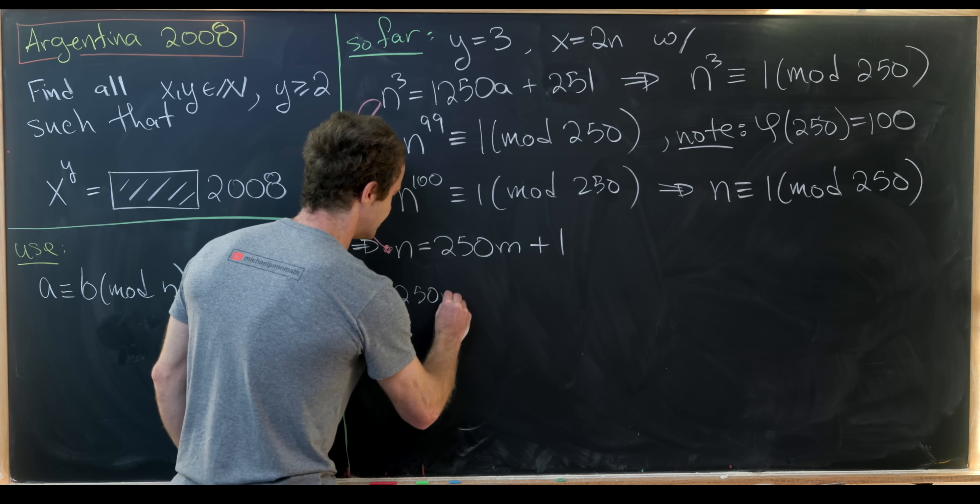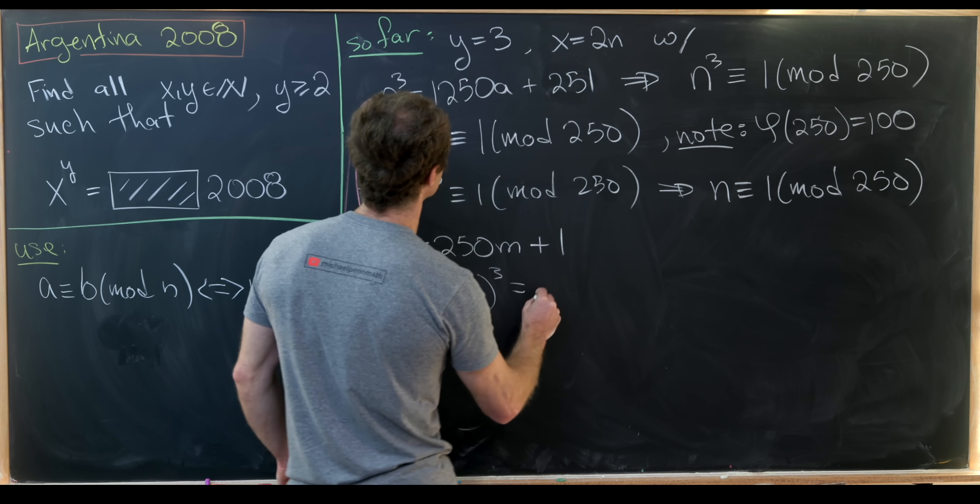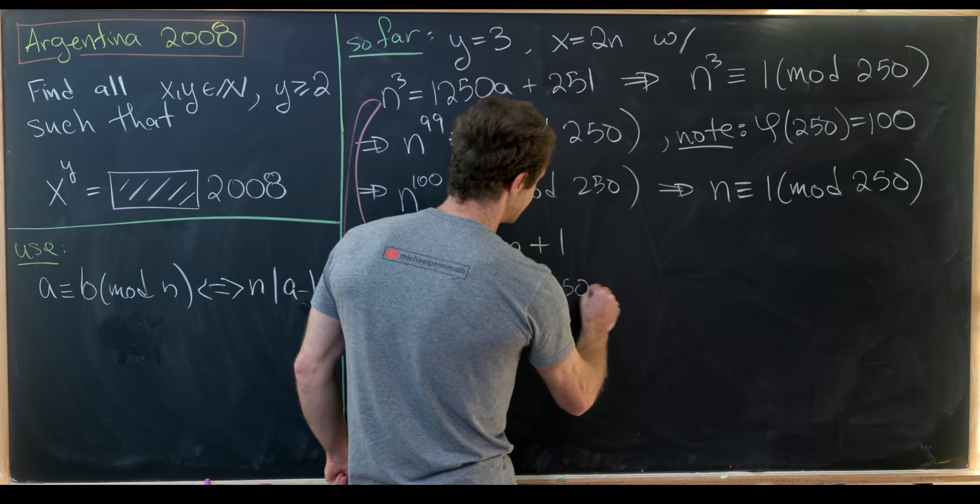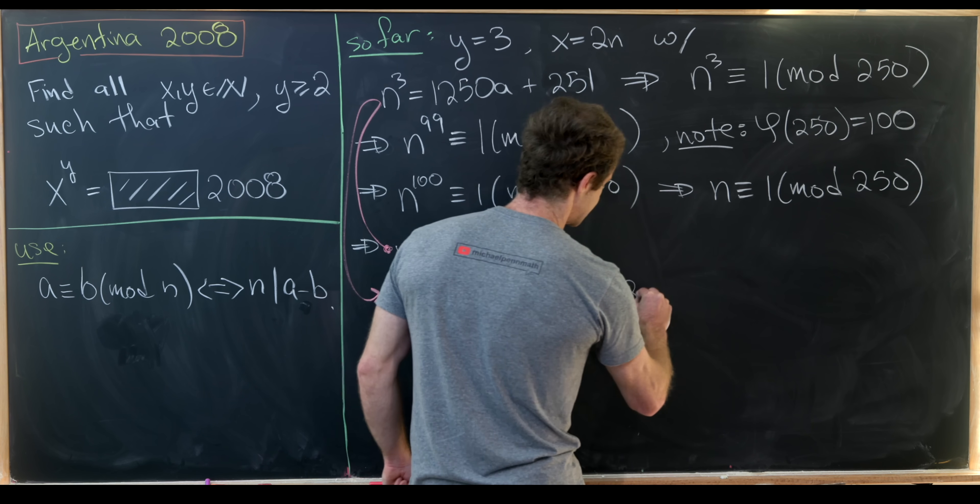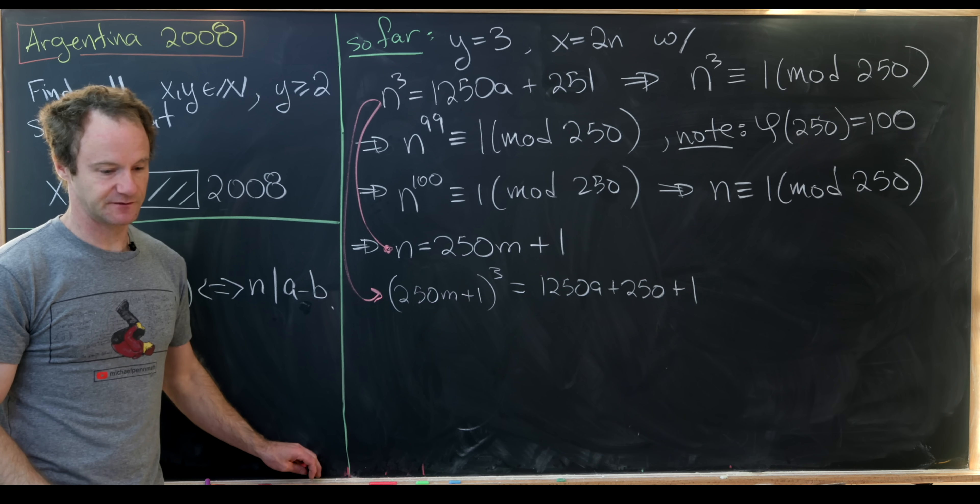So we have 250m plus 1 quantity cubed is equal to 1250a plus 250 plus 1. I've written that 251 is 250 plus 1.